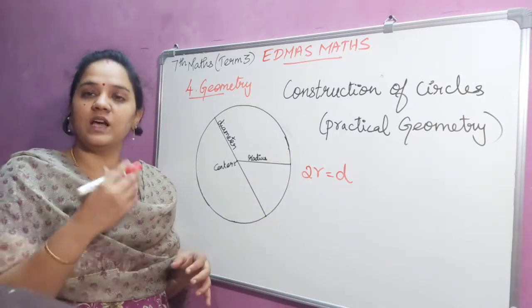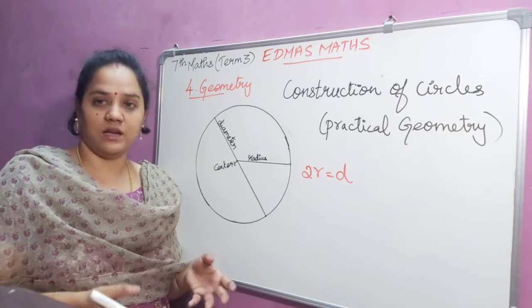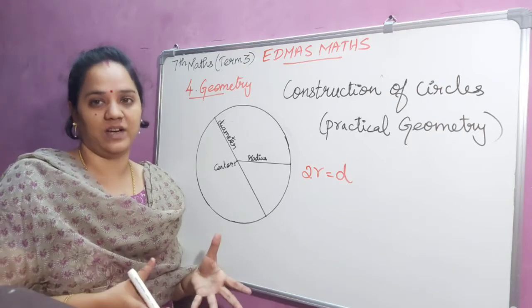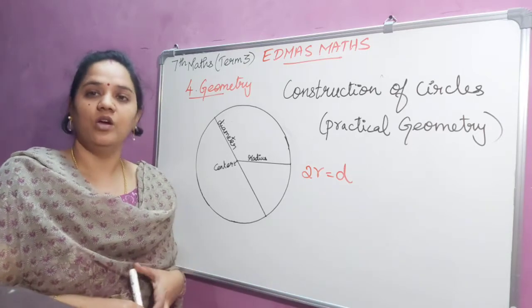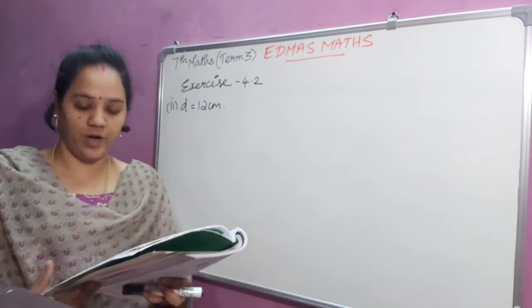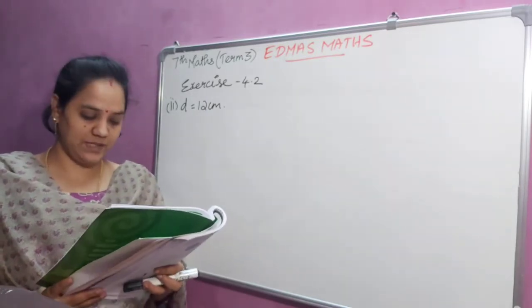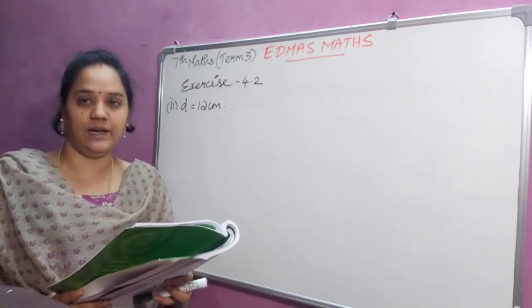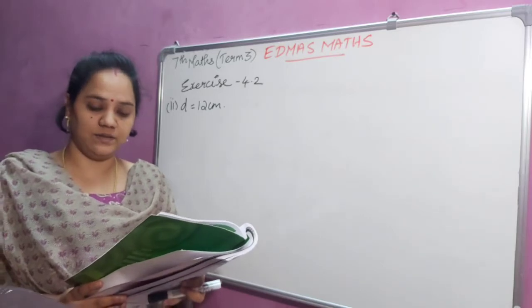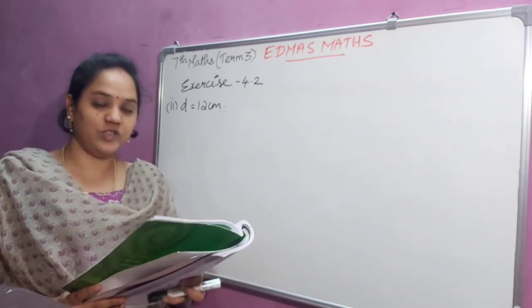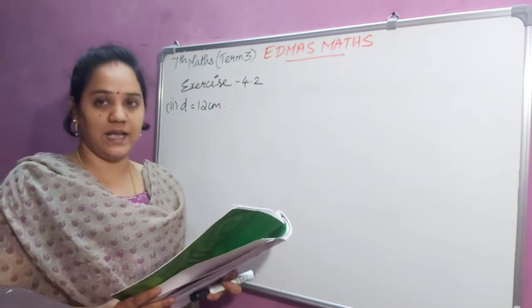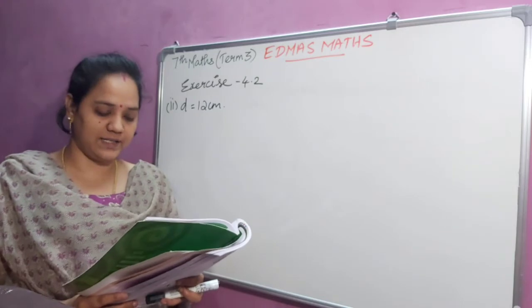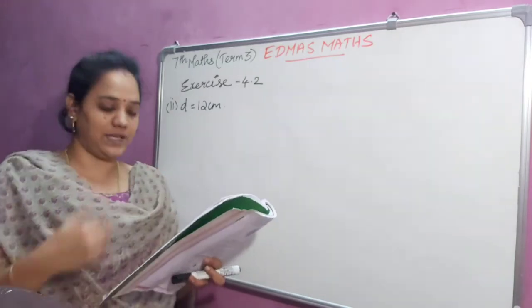We also learnt the circumference of the circle and the area of the circle in second term. So now we are going to construct a circle using compass — exercise 4.2, page number 89. The first problem is: draw circles for the following measurements of radius or diameter. Radius means r, diameter means d. The first option is r equal to 4 centimeter, where radius is directly given, so we can use it directly.